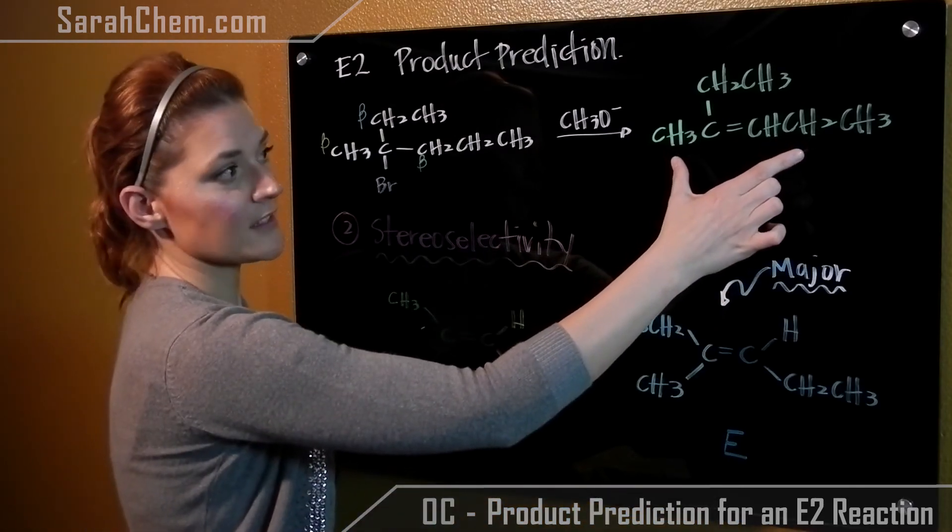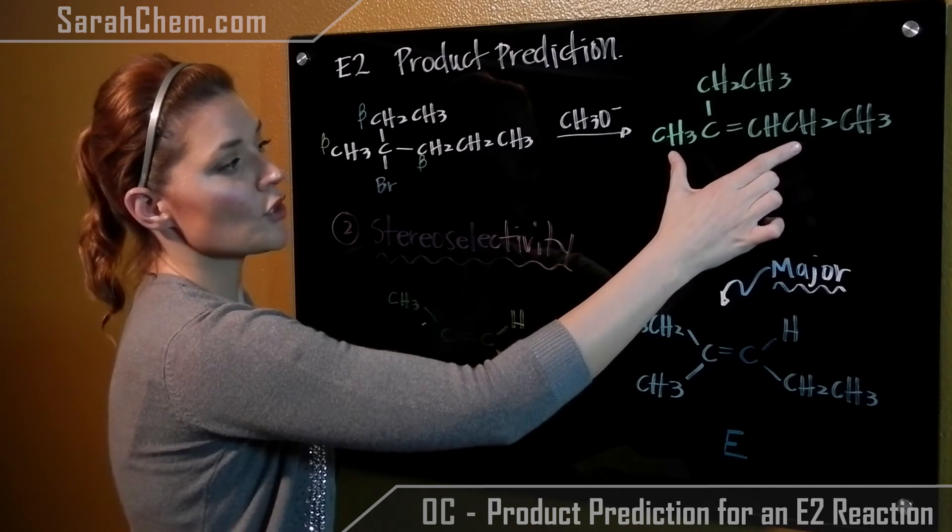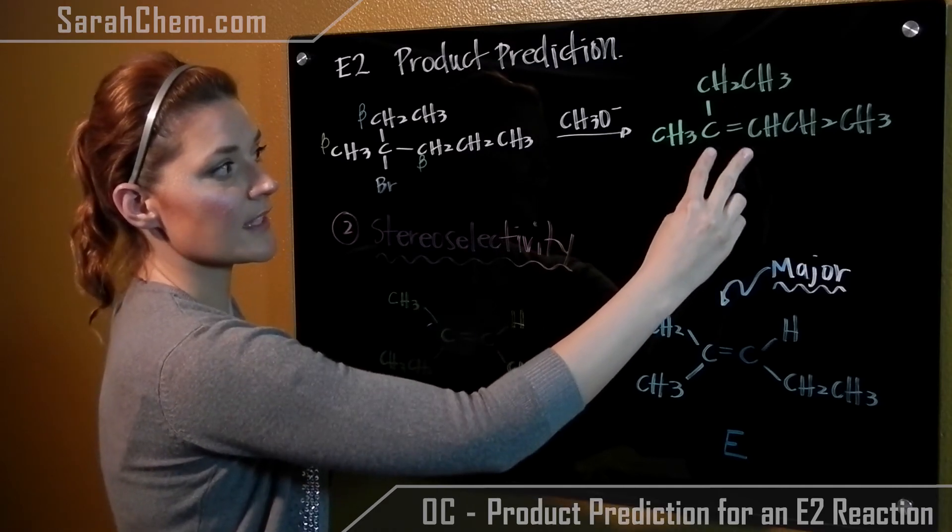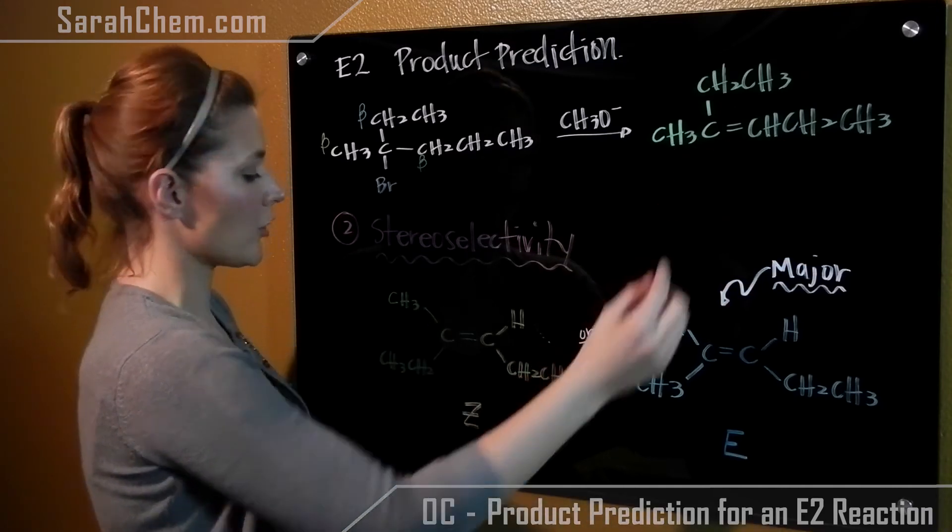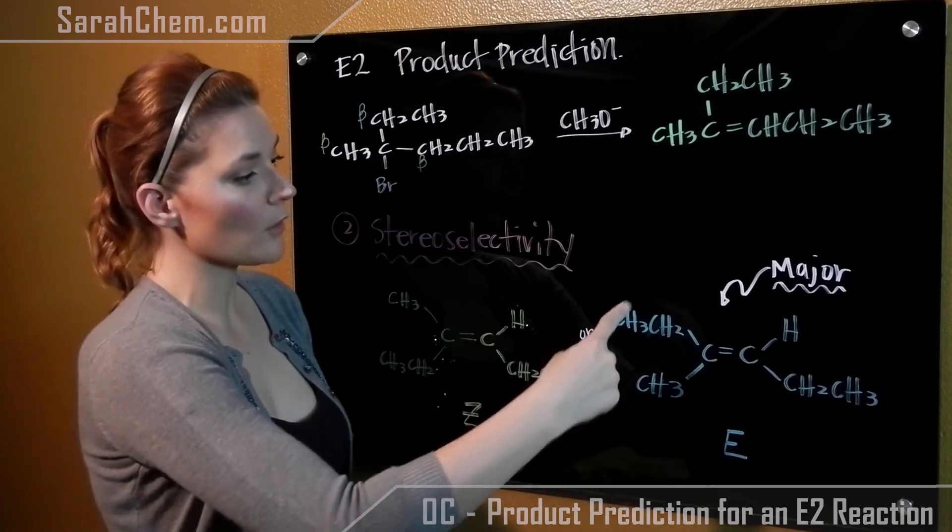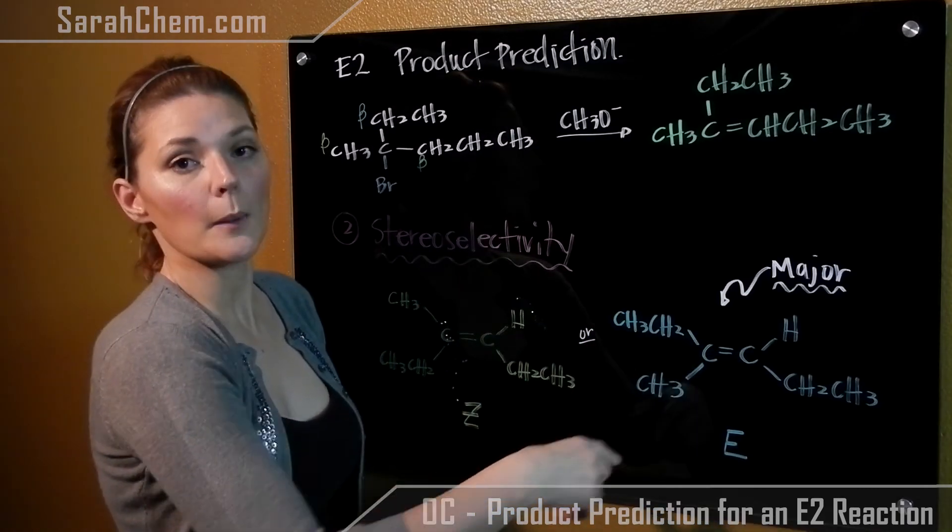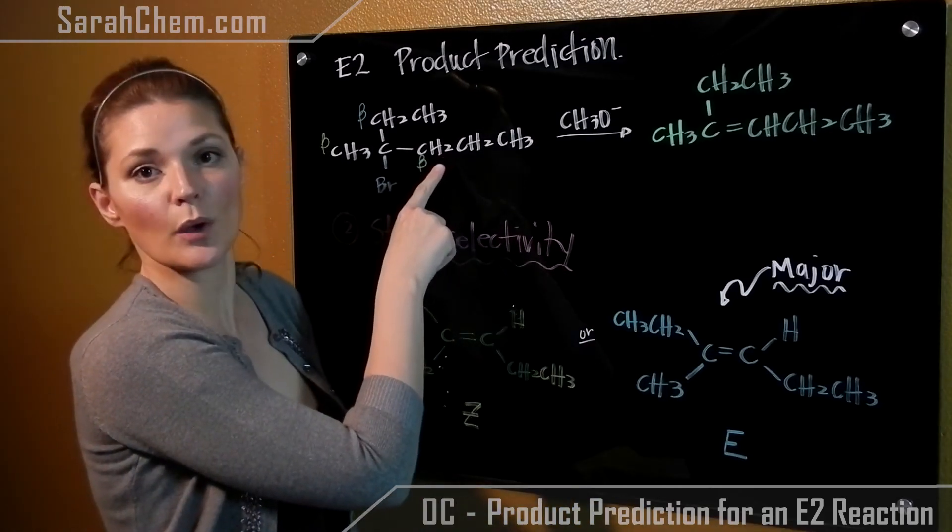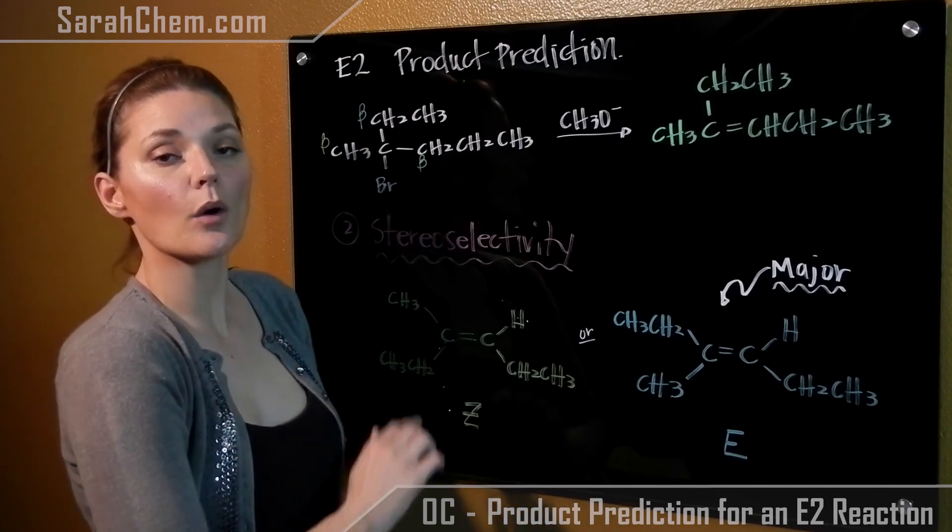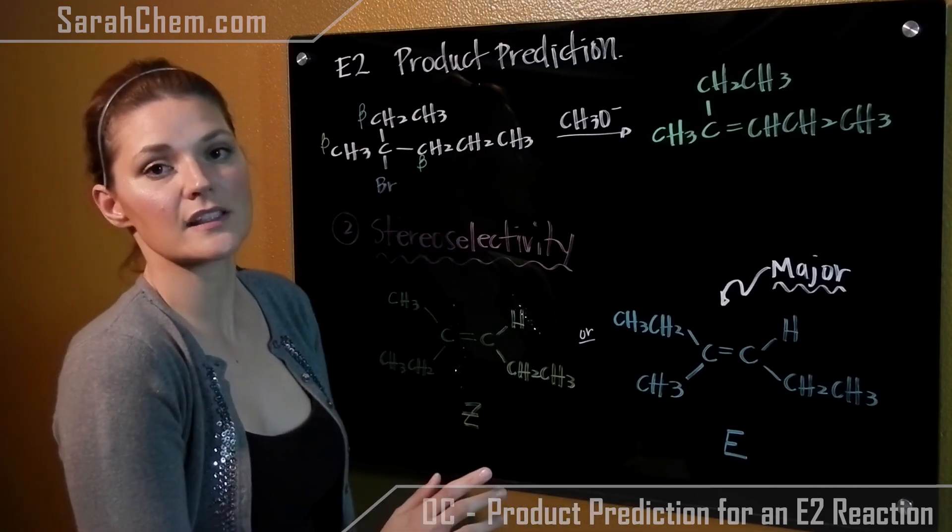So this is our major product based on what our previous work was. So when we take a look at this, we can see that this alkene can have two possible arrangements, either the Z arrangement or the E arrangement. Because this beta carbon had two hydrogens initially, we know that both the E and the Z isomer will form.